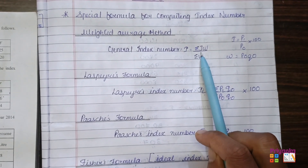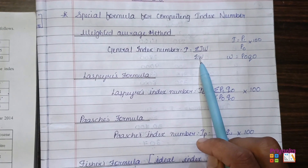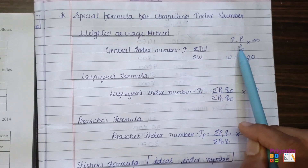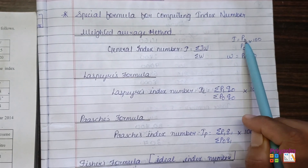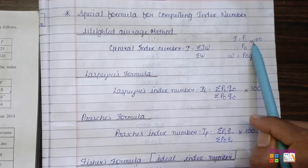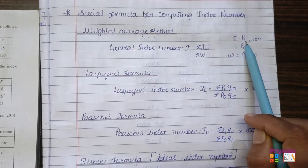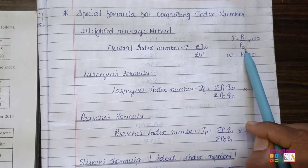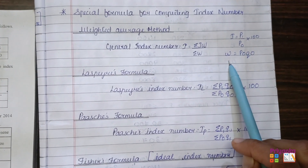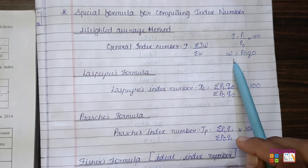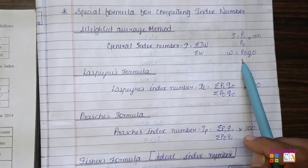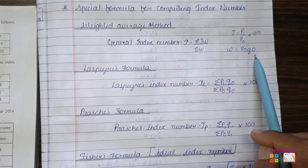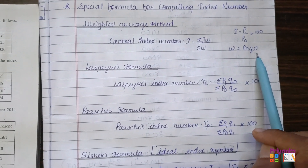Many times in these questions the information will not be clearly given. Here, 'i' will be denoted as p1/p0 multiplied by 100, where p1 means the current year and p0 is the base year. If the weightage is not given, then you can take it as p0q0 — you will understand more when we start with the solution.